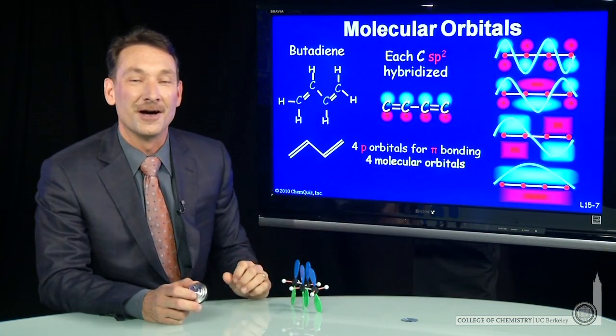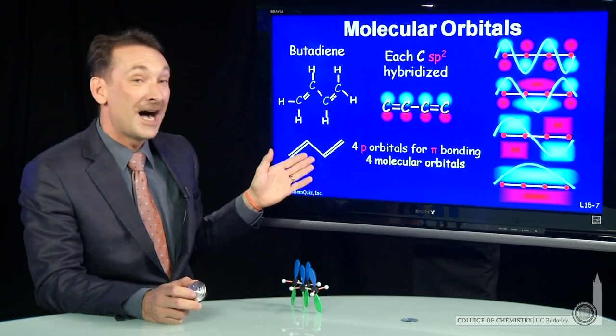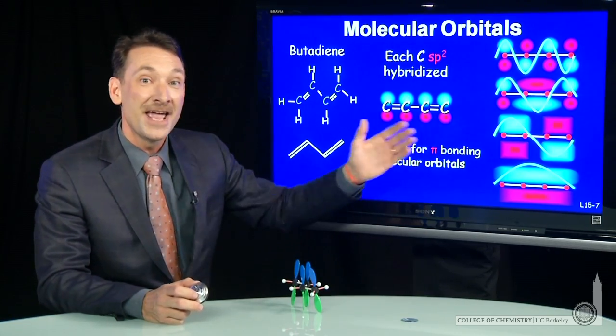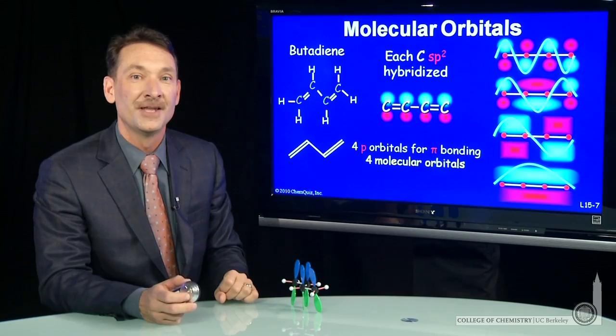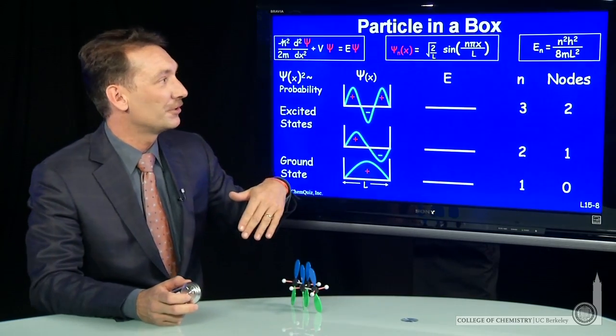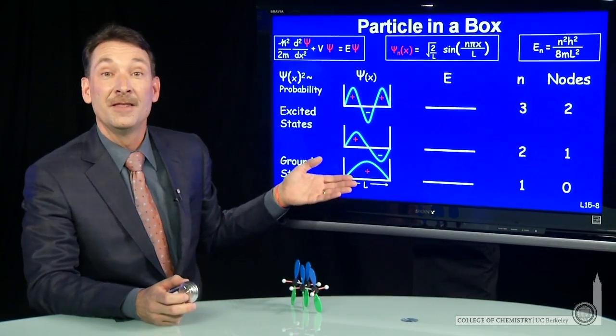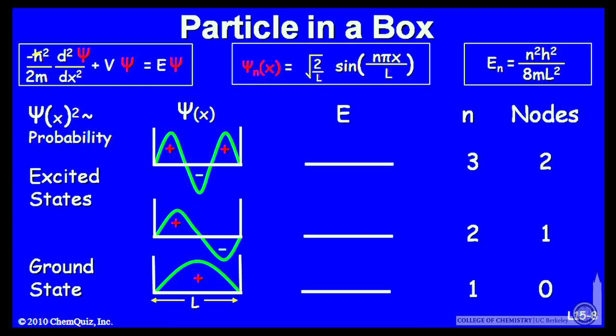So it's interesting. Delocalized electrons along a conjugated system of alternating double bonds behave like particles in a box. So let's just remind ourselves of the particle in a box wave functions. Here they are. They look just like what we just saw.